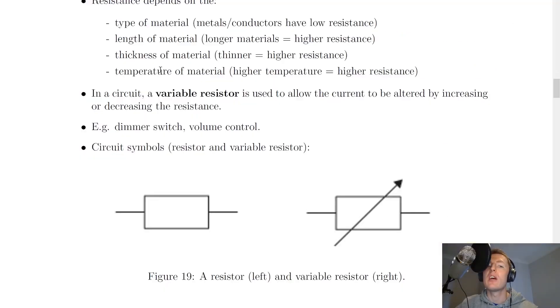Lastly, temperature of material - a higher temperature means a higher resistance. This is all to do with the atoms in materials which are going to vibrate more when you heat up the material, and that means the atoms are going to collide more with the electrons that are trying to move in the material, which means there's going to be a higher resistance. We'll see this later when we talk about non-ohmic conductors.